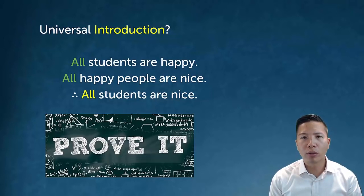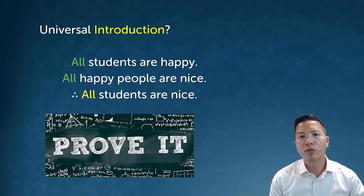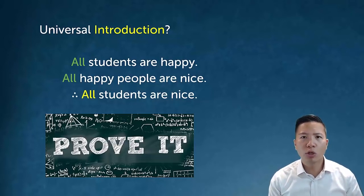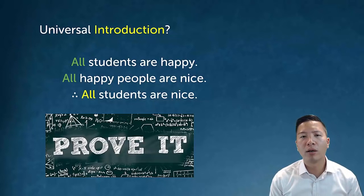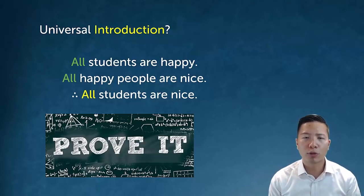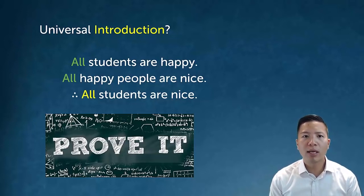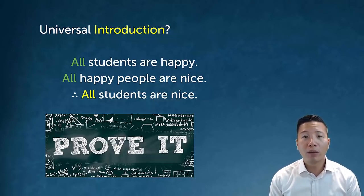This is deductive logic we're doing, so I can't do it inductively. Typically when I want to prove or establish universal claims, you do so in some statistical way — you polled X number of people and they're a pretty good representative portion of the population, so you can make a general universal claim. But that's inductive reasoning and not what we're doing here. To actually prove the conclusion 'all students are nice,' assuming the premises are true, would mean I'd have to investigate every single student in the universe of discourse and find out if they're nice.